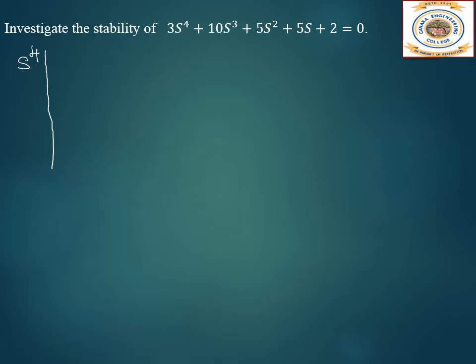First we have to write the Routh array. The highest power is s⁴. The coefficient of s⁴ is 3, then the even power coefficients: 5 and 2. Next, for the s³ row, the coefficient is 10, then the odd power coefficient: 5.